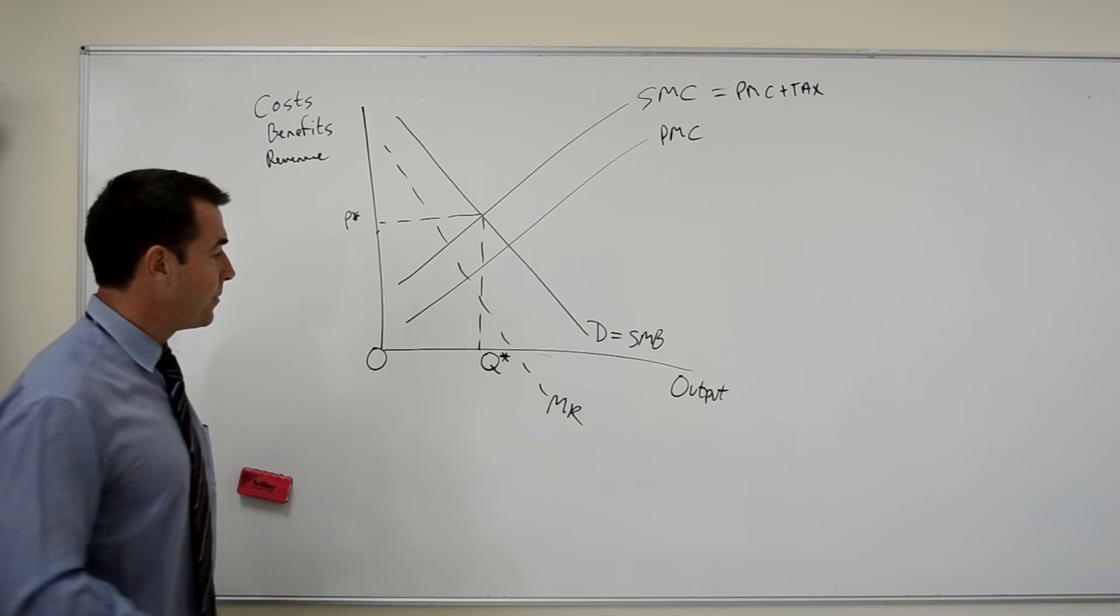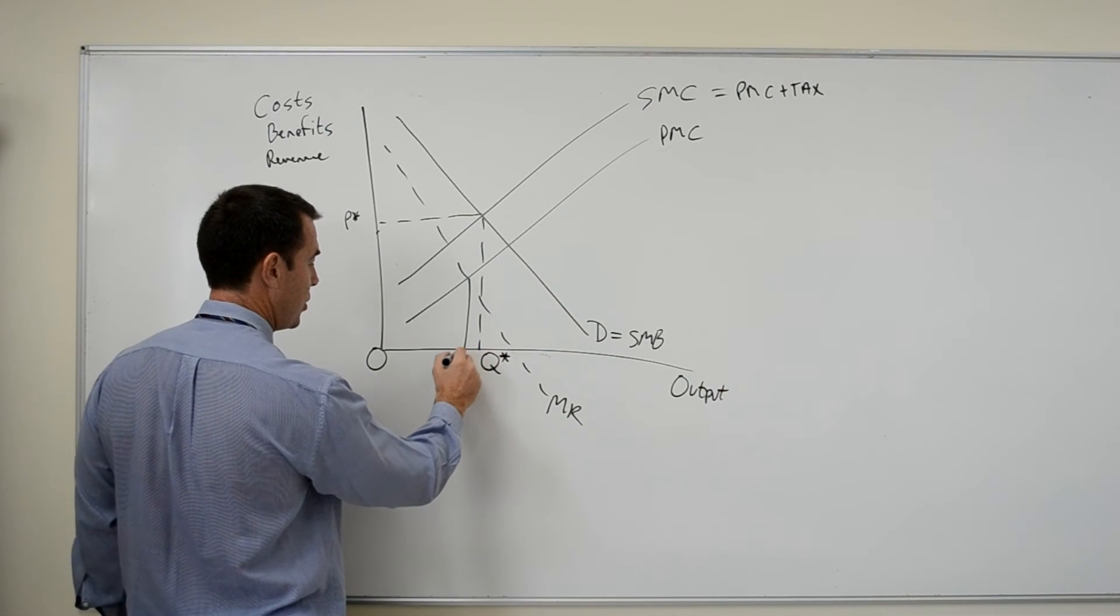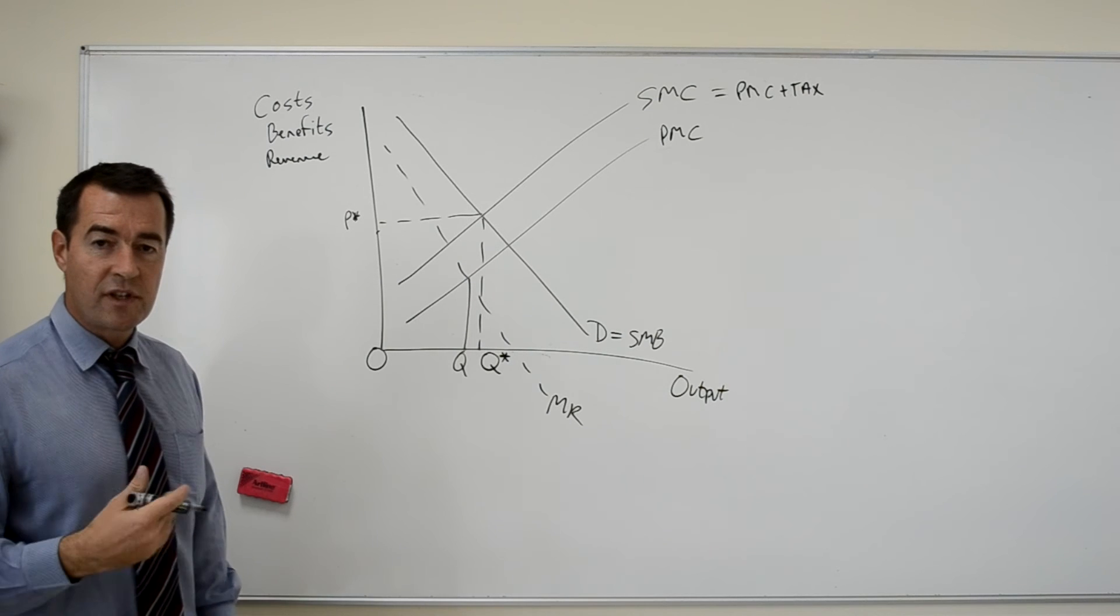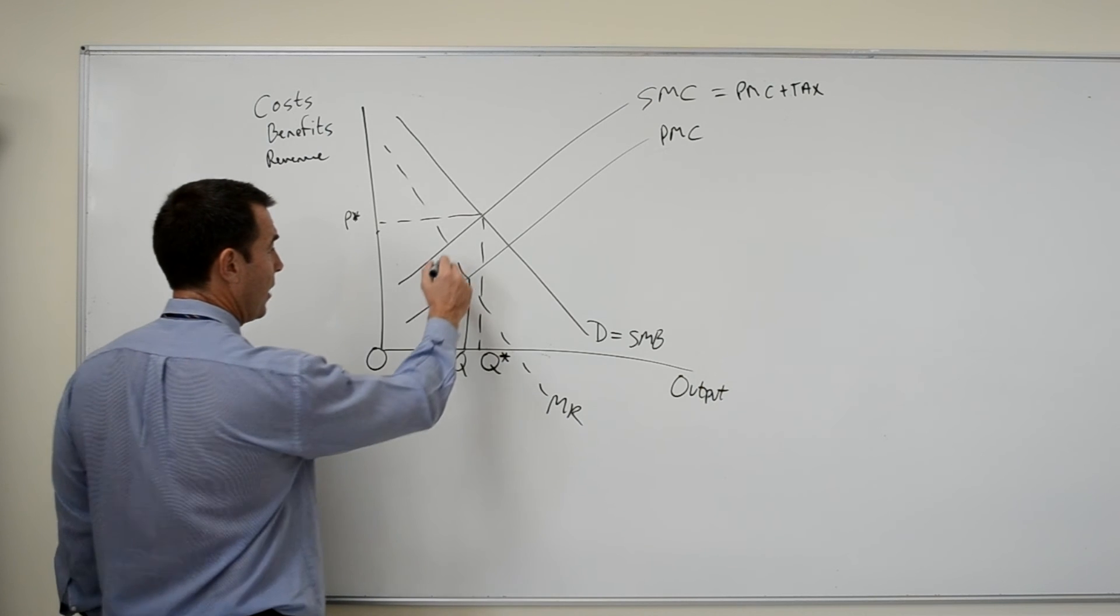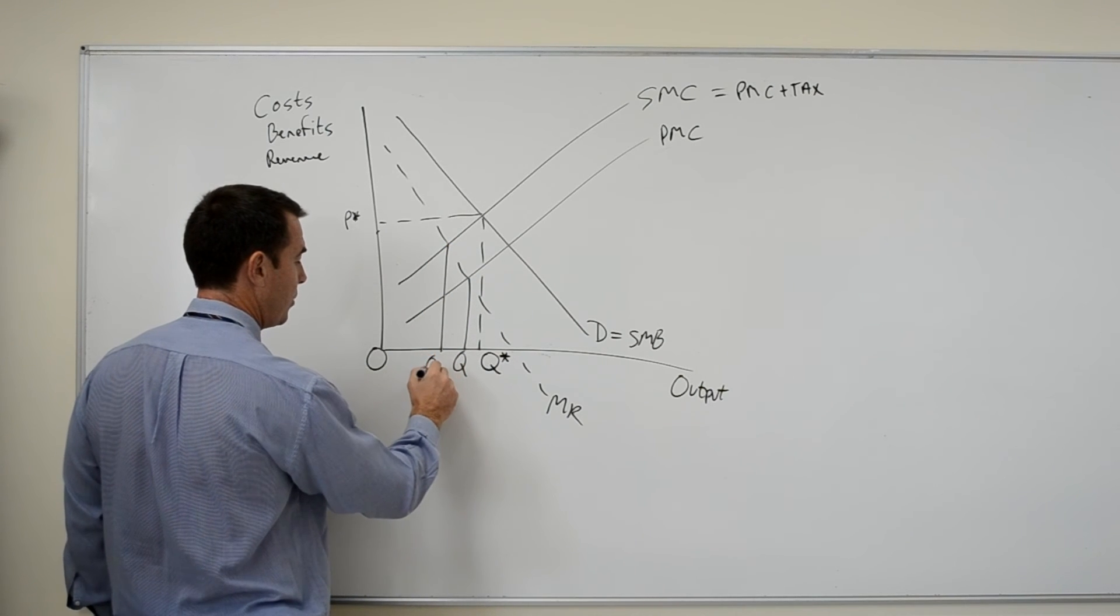means that originally output was set at OQ. As a result of the new marginal cost curve, which is the same as the social marginal cost curve, output is now OQ1.